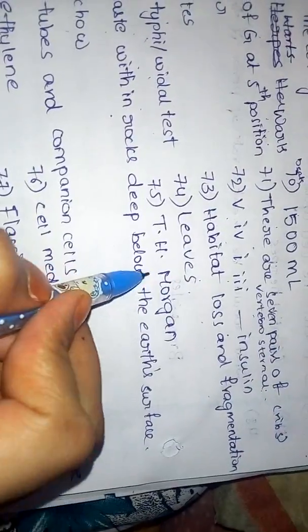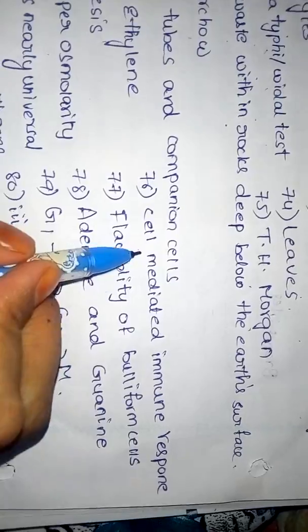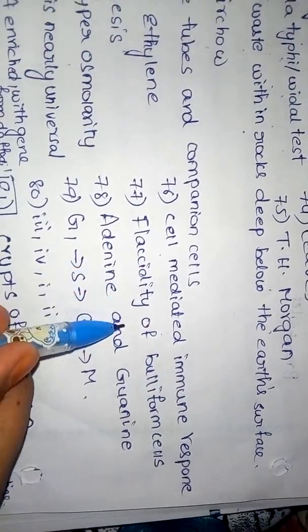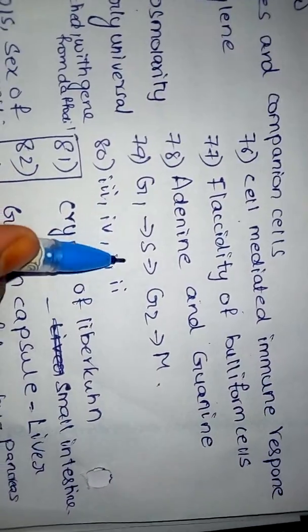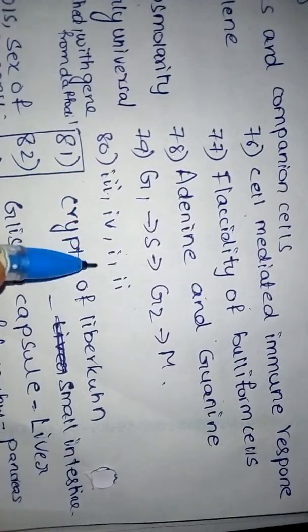Habitat loss and fragmentation leaves. T.H. Morgan, cell mediated immune response. Flaccidity of bulliform cells. Adenine and guanine. G1, S, G2, M phases 3412.